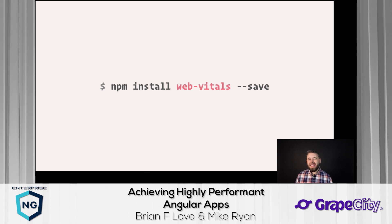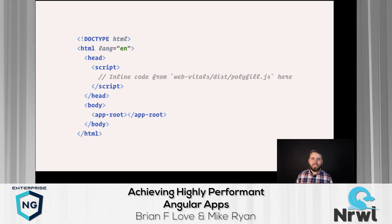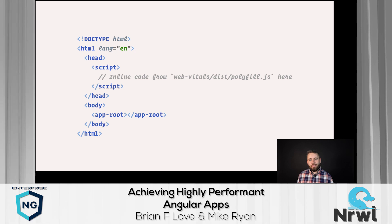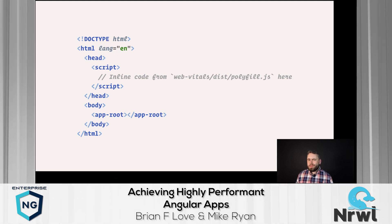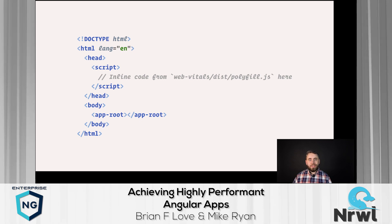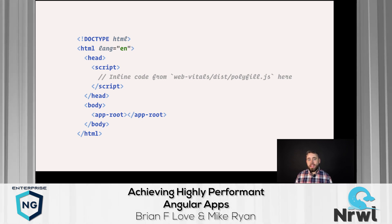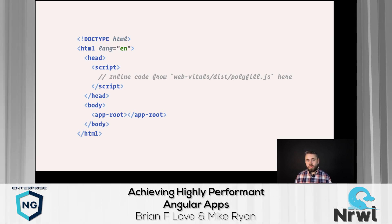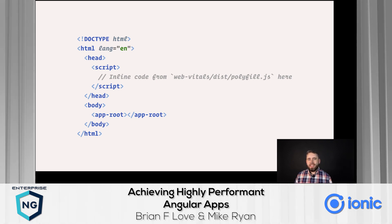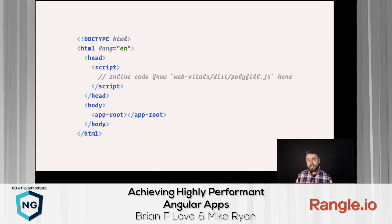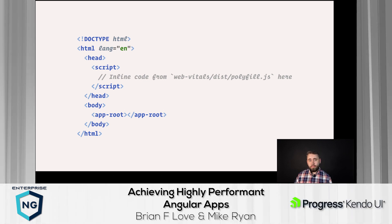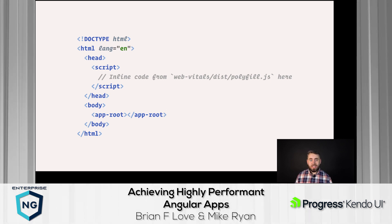After npm installing the Web Vitals library, you do something a little unusual — you go into the polyfill.js file in the dist folder and inline the contents of that file directly into the head of your HTML document. This is important because the polyfill needs to run immediately before any other JavaScript runs and before the browser renders anything. This ensures really accurate readings on CLS, FCP, LCP, and FID. It's a little unusual but makes sense when you consider we need valid measurements.